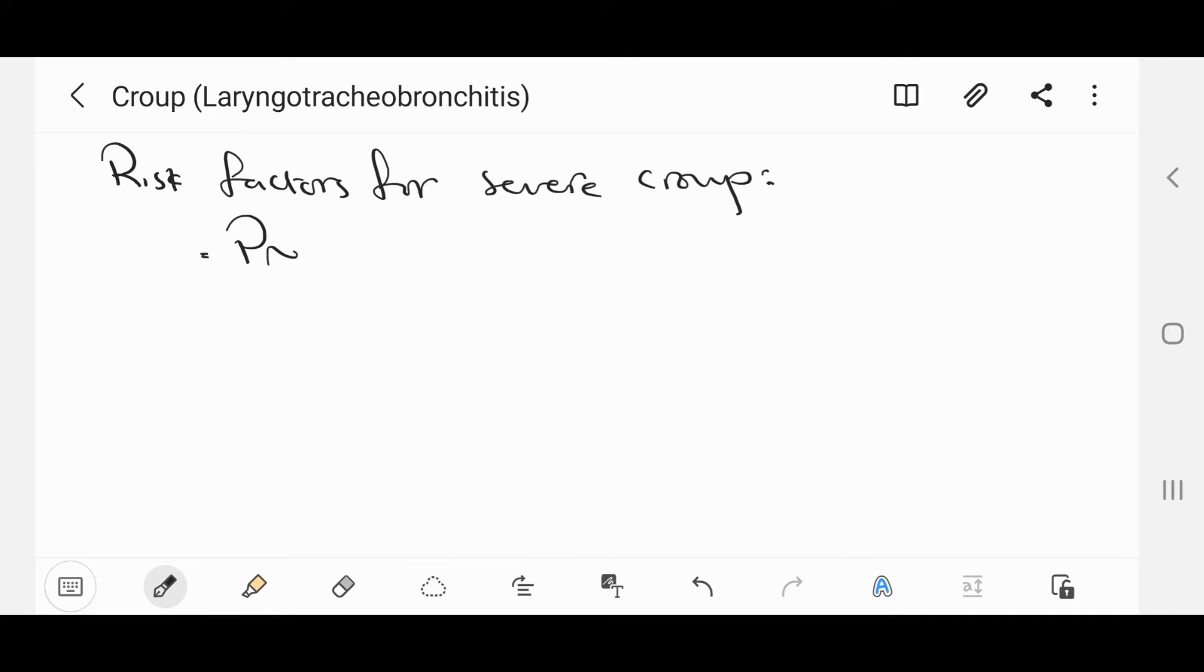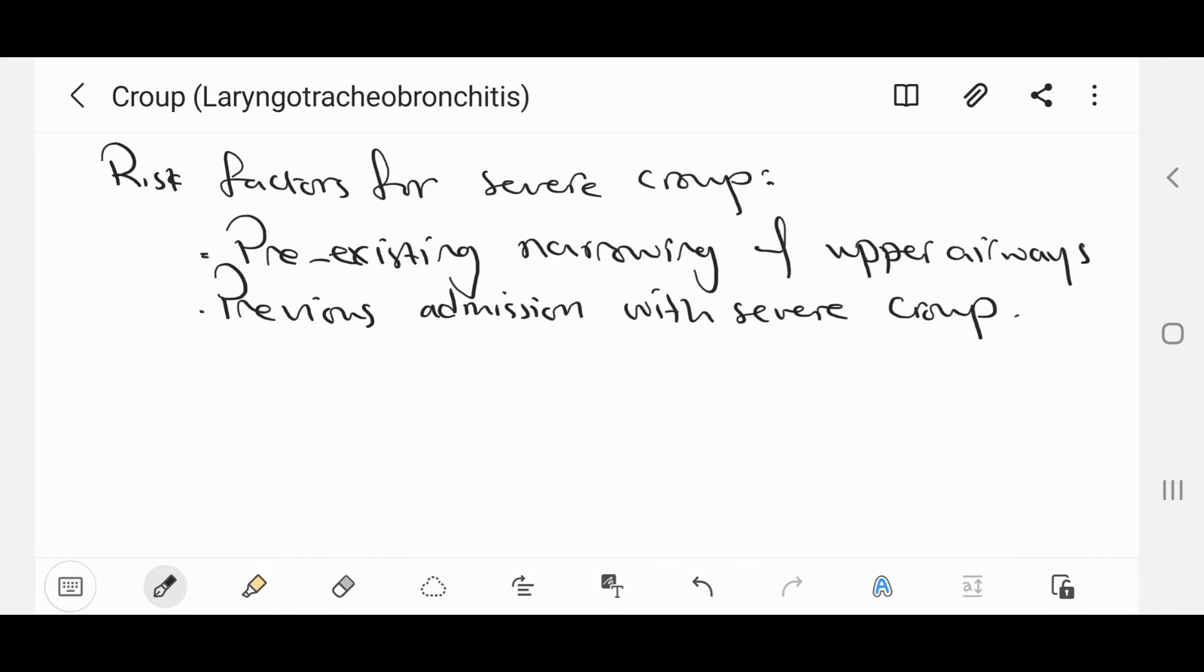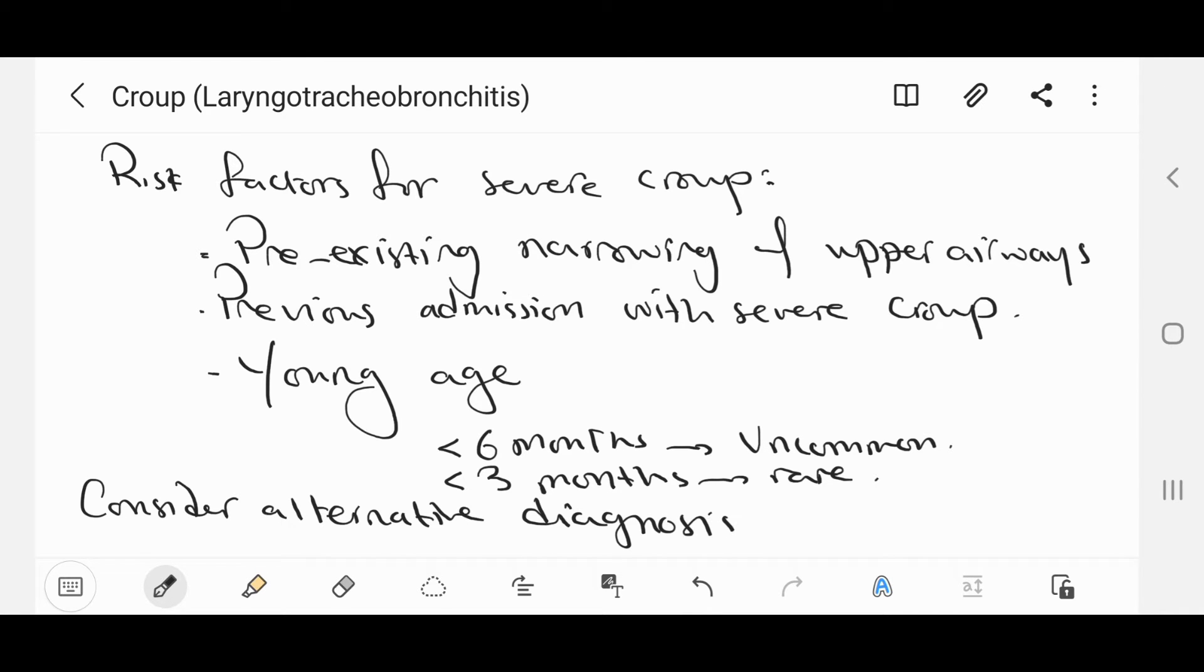The risk factors for severe croup are pre-existing narrowing of upper airways, previous admission with severe croup, and young age. It is uncommon to have croup before six months, and it is rare to have it before three months, so we should consider alternative diagnosis and causes of upper airway obstruction.